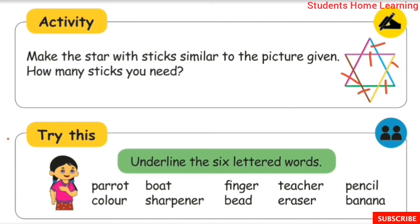Try this: underline the six-lettered words. The words given are: parrot, finger, pencil, color, eraser, banana. Underline the six-lettered words from this list.